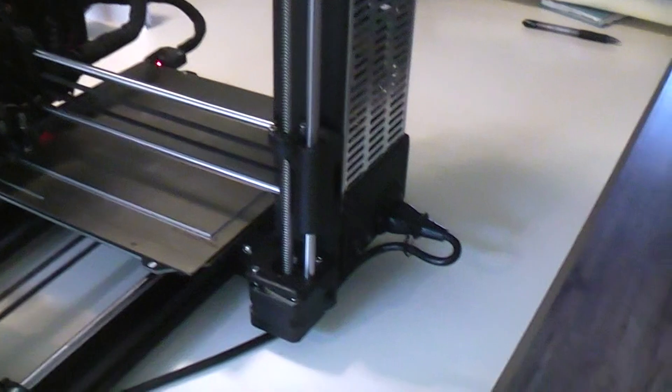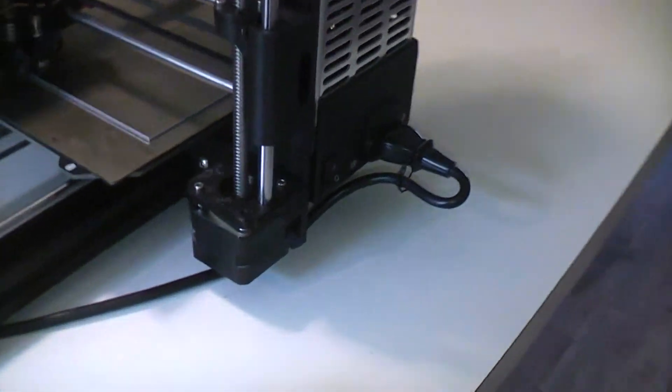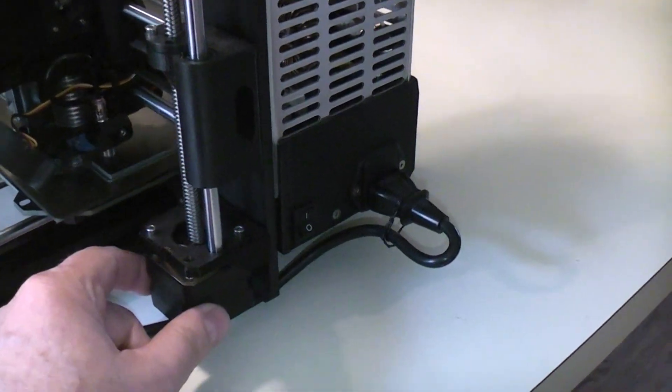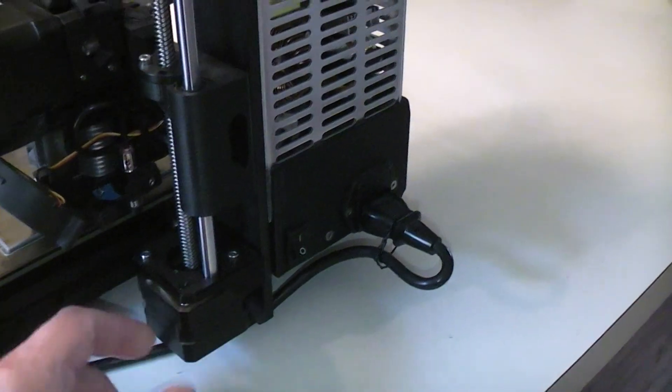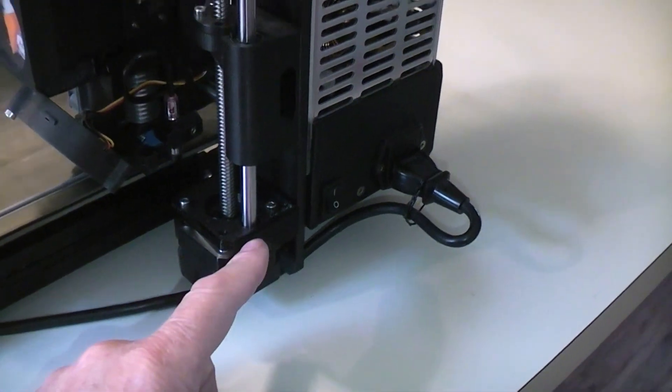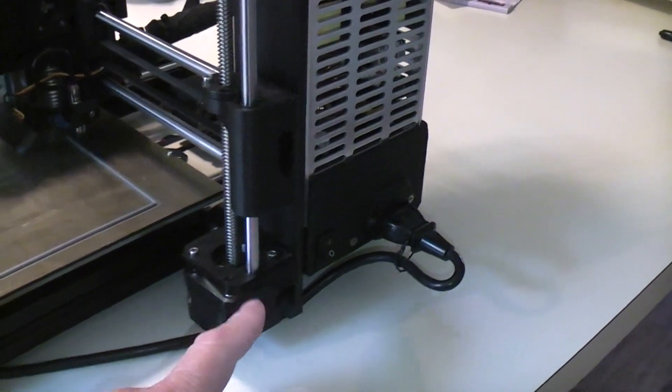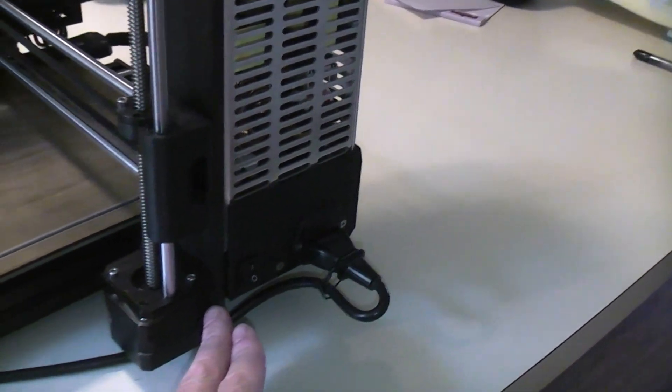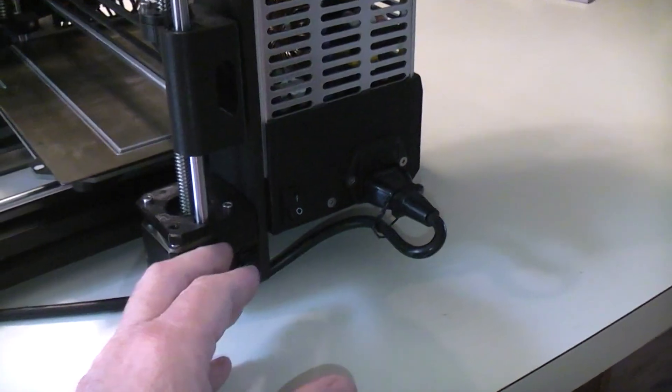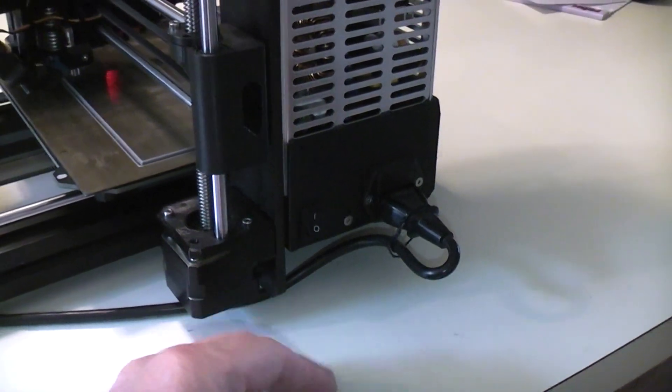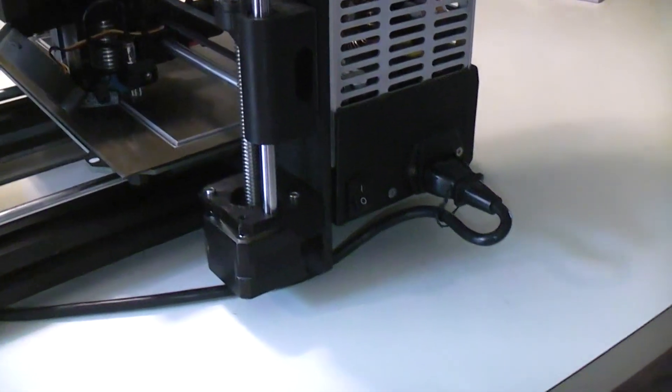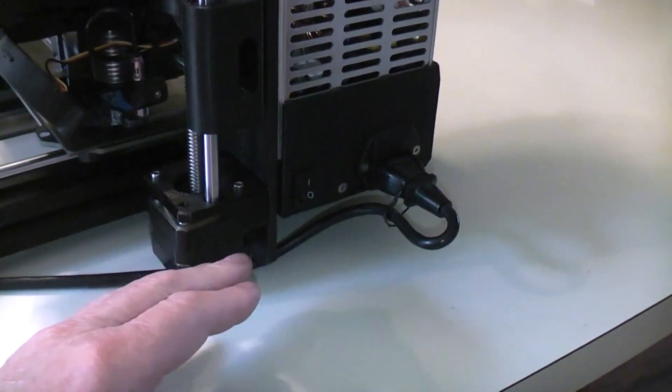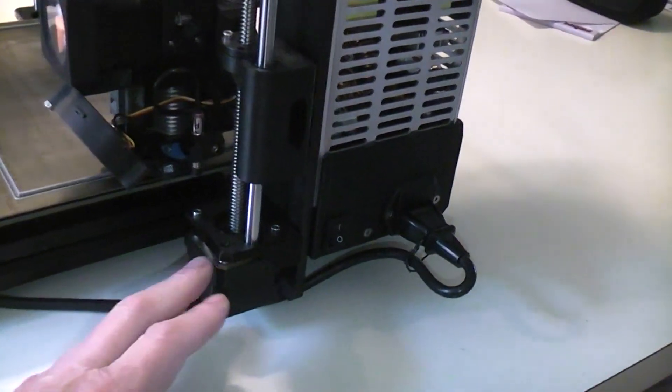I found that the stepper motors actually fit fairly snug into the PETG brackets from Prusa. They definitely touch on the backside back in here and they do touch a little on the sides. So there's no point putting stepper dampeners in there because you've got a mechanical connection from the motor directly to the frame, which defeats the whole purpose.